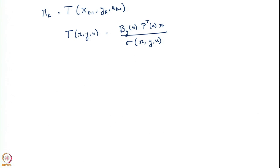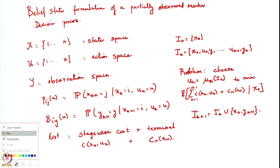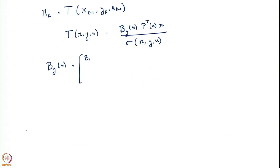B_y(u) is a diagonal matrix constructed from the probability kernels b_{iy}(u) for every state i and observation y — stacked along the diagonal for all n states. So it is a diagonal matrix with entries b_{1,y}(u), b_{2,y}(u), ..., b_{n,y}(u). The matrix P(u) is the transition probability matrix: for each action u, it is an n×n matrix where entry (i,j) gives the probability of transitioning from state i to state j under action u. So P(u) is the matrix with entries p_{ij}(u) in the i-th row and j-th column.